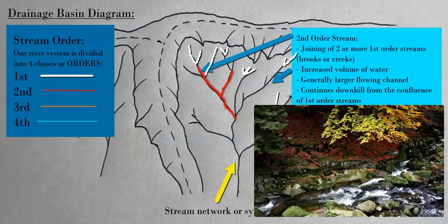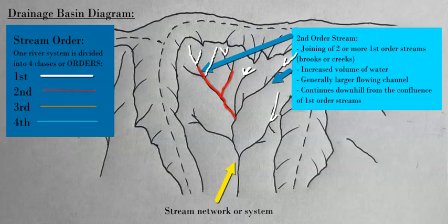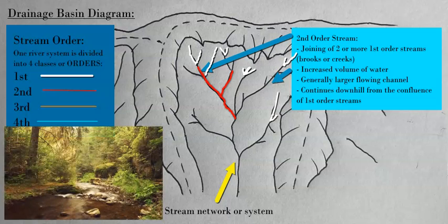This usually occurs at a lower elevation than the first order stream. We know it's a first order stream because there are no other streams above it at higher elevation feeding into it — so it is the first or initial part of the water flow.